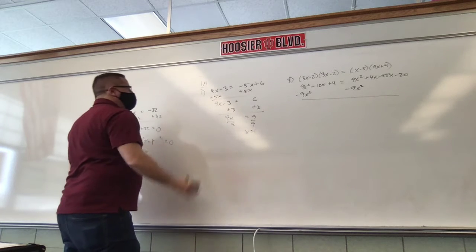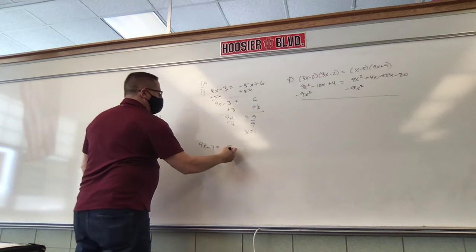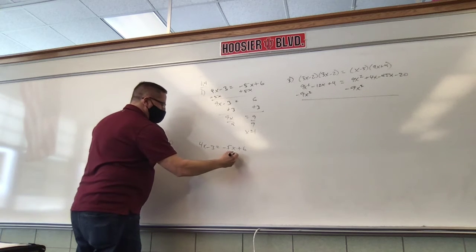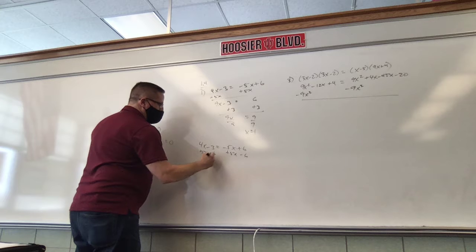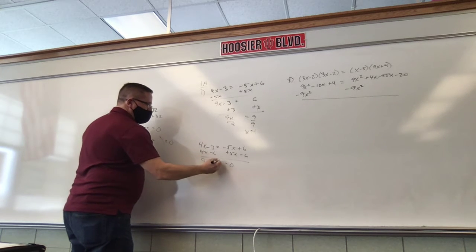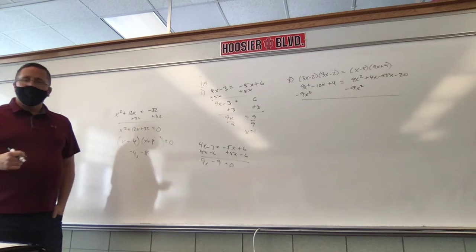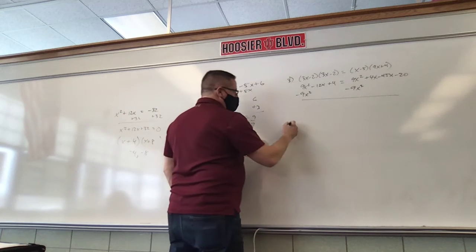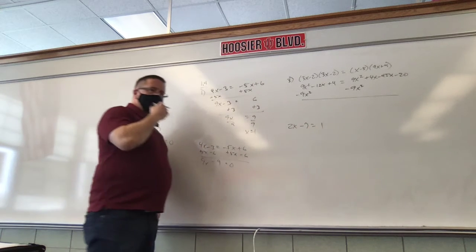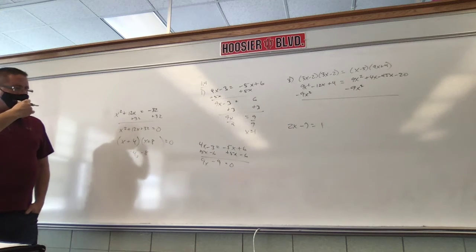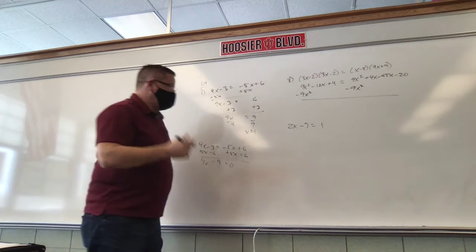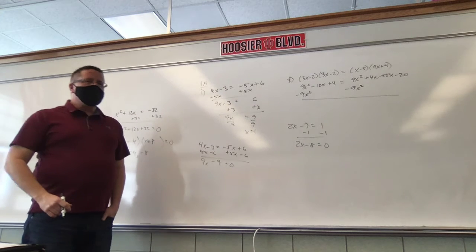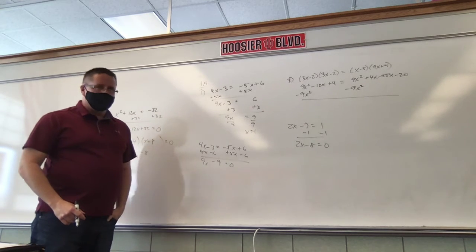Here's my point. If I give you 4x minus 3 equals negative 5x plus 6, this doesn't have to equal 0. We could make it equal 0 — we could add 5x and subtract 6 from each side, giving 9x minus 9 equals 0. You could do that, but you don't need to. At the first degree, equations do not have to equal 0. Same with something like 2x minus 7 equals 1 — just add 7 and divide by 2.